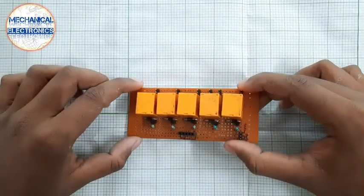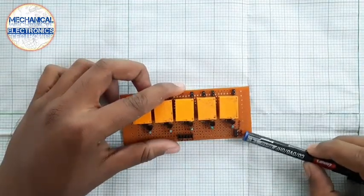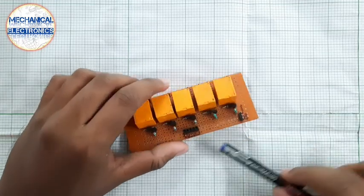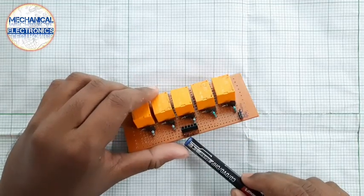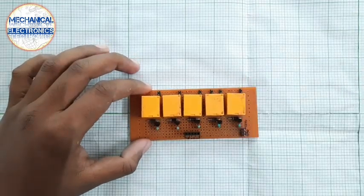So our 12-volt 5-channel relay module is fully made. And I have made a common GND here. A 12-volt positive pin. Then, the 5-volt positive. Let's just test it whether it is working or not.